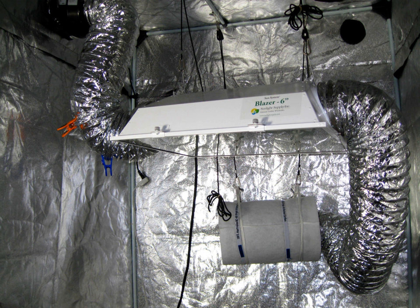A cold cathode is a cathode that is not electrically heated by a filament. A cathode may be considered cold if it emits more electrons than can be supplied by thermionic emission alone. It is used in gas discharge lamps, such as neon lamps, discharge tubes, and some types of vacuum tube. The other type of cathode is a hot cathode, which is heated by electric current passing through a filament. A cold cathode does not necessarily operate at a low temperature; it is often heated to its operating temperature by other methods, such as the current passing from the cathode into the gas.